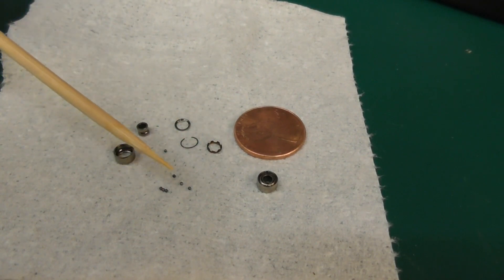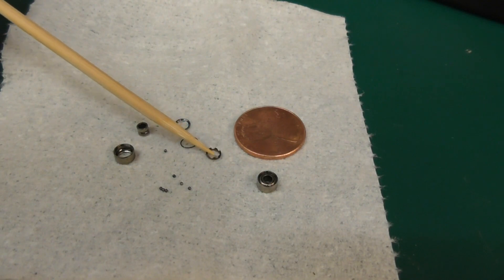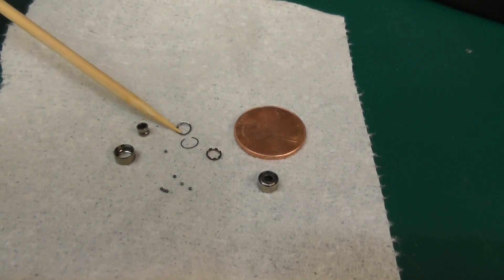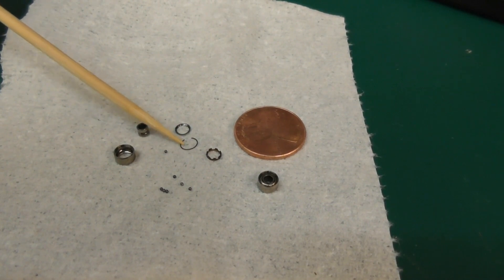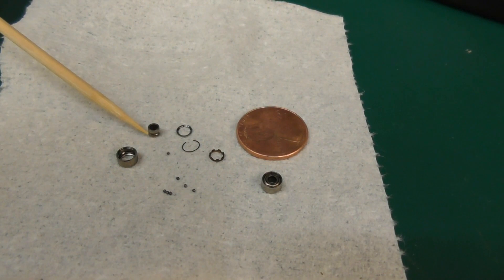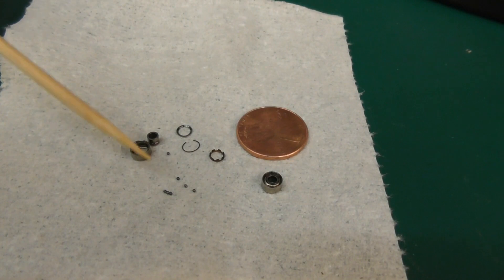It's got seven balls in it. You see those little balls there? This is a bamboo skewer—look how small that is. So seven balls, there's the cage right there, it is a plastic cage, that is the shield, and that is the clip that holds on the shield, the inner race right there, and then the outer race.